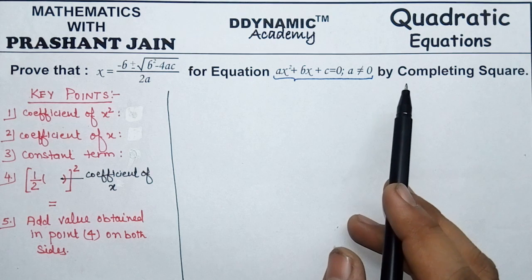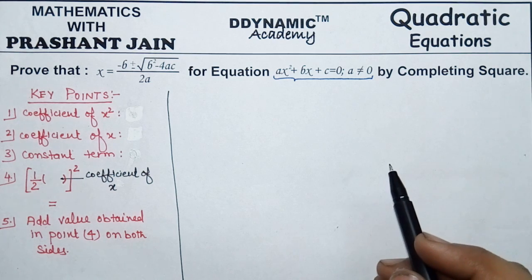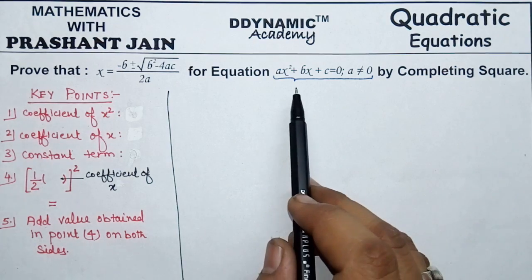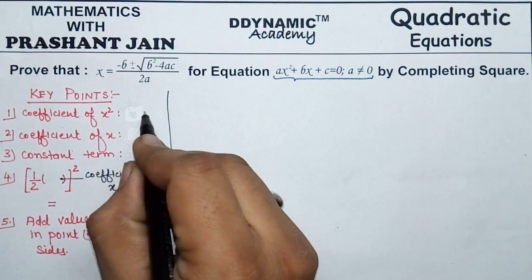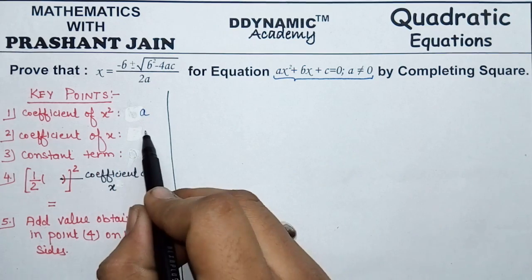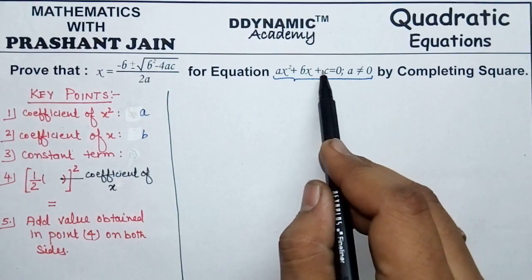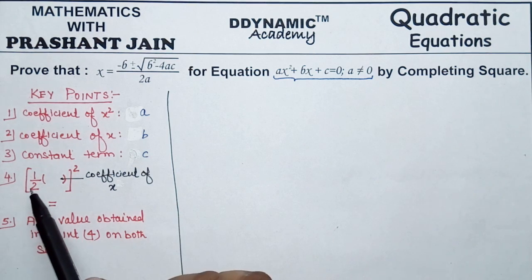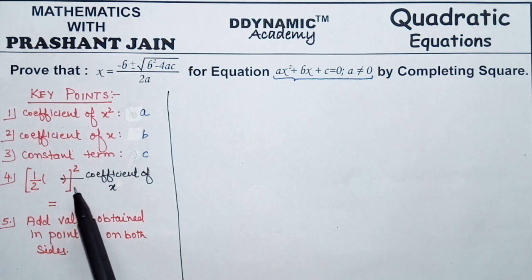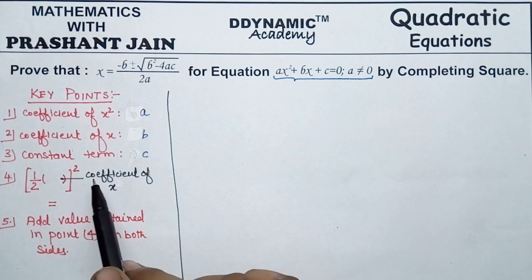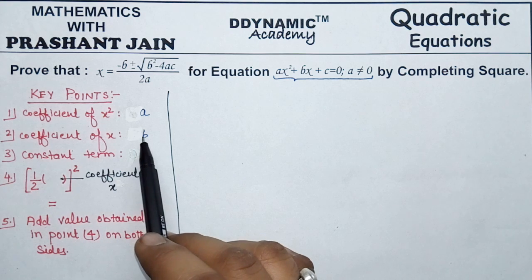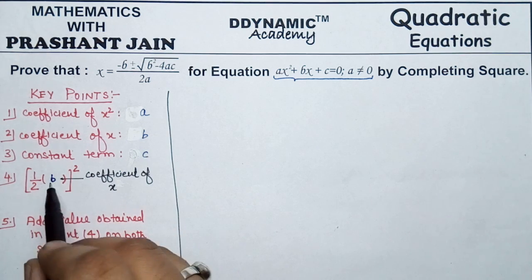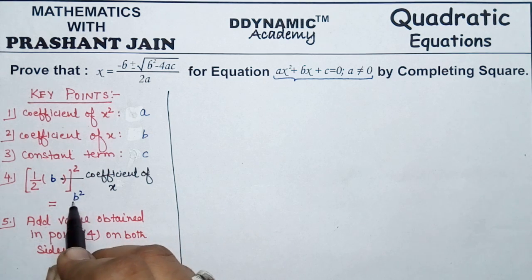On the left-hand side you will see some key points already mentioned, and we just have to fill in the values by looking at the quadratic equation. The coefficient of x² is a, the coefficient of x is b, and the constant term is c. In the fourth point, we take half of the coefficient of x, which is b, so half of b squared becomes b²/4.